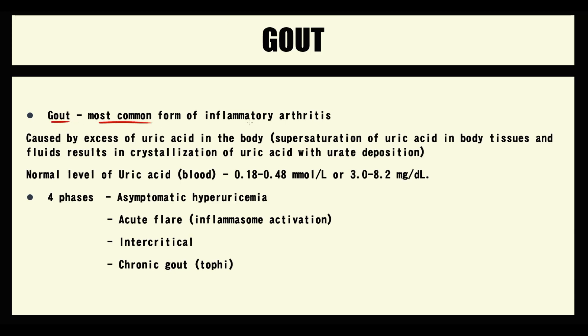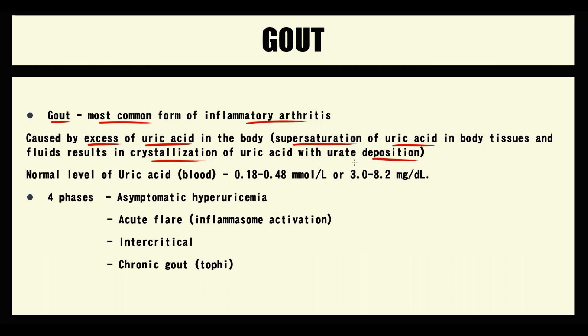Gout is the most common inflammatory arthritis. Gout is caused by excess uric acid in our organism. Basically, at some point the amount of uric acid in our tissues becomes so huge that uric acid crystallizes and precipitates. In the form of crystals, uric acid progressively accumulates in the tissues and causes clinical symptoms.